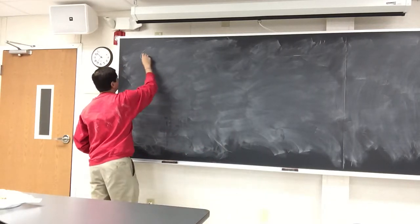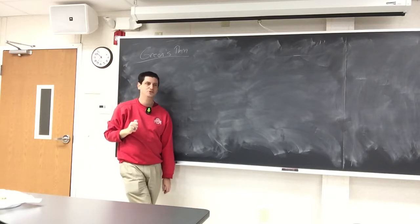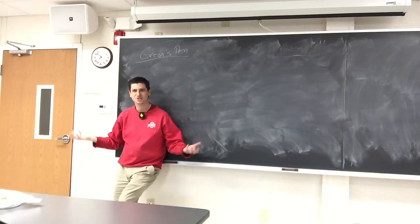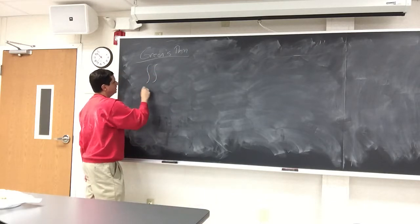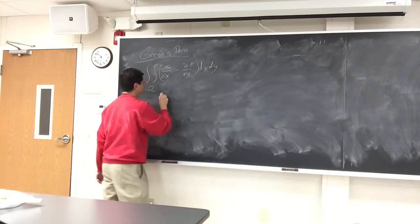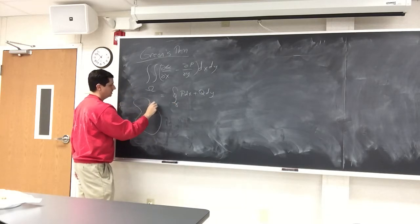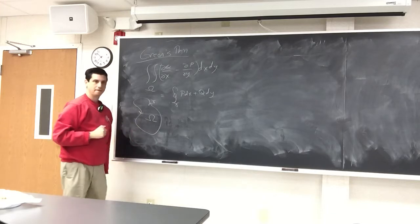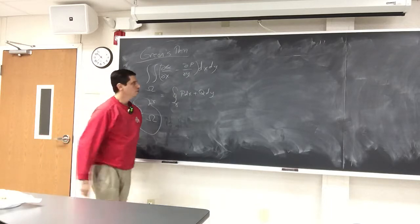For the last bit of class, let's do a quick sketch of Green's theorem. We prove it for rectangles first, then generalize. We have ∬_Ω (∂Q/∂x − ∂P/∂y) dx dy = ∮_γ P dx + Q dy. Label the four sides of a rectangle as γ₁, γ₂, γ₃, γ₄ with corners at (a,c), (b,c), (b,d), (a,d).